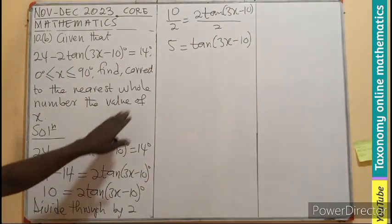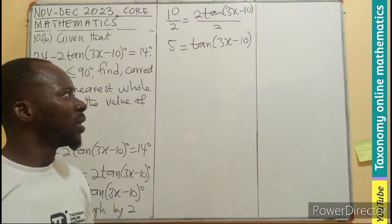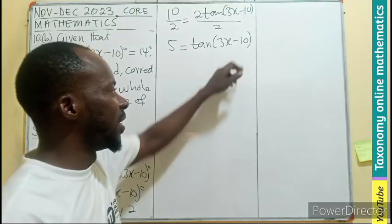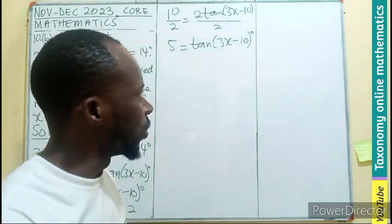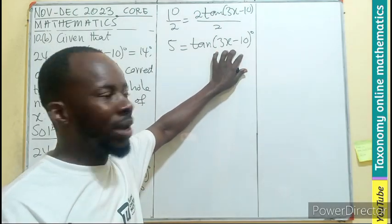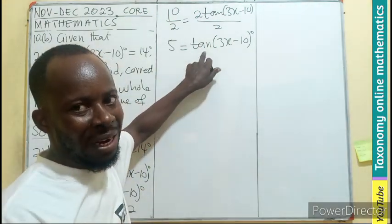So this is solving the equation. Now when you get to this place, this is the angle. You know tan is always of an angle, so this is the angle. So we are going to leave the angle and divide through by tan.